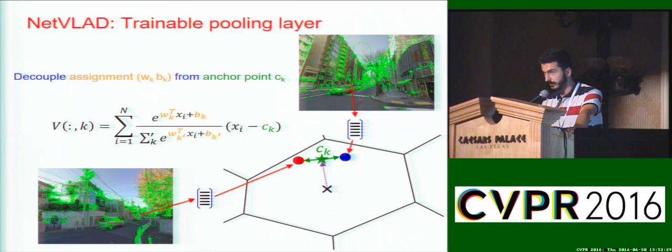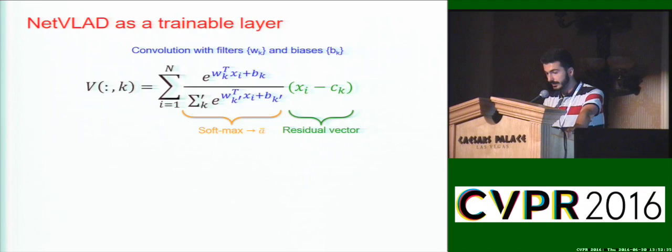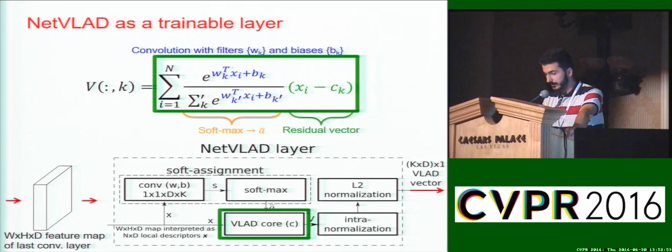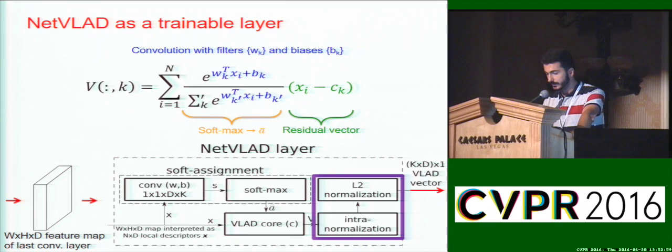The NetVLAD layer can be implemented easily in a standard CNN framework, where the input is the feature map from the last convolutional layer. These features are then passed through a convolution, followed by a softmax, which produces the soft assignments. These soft assignments are then combined with the input features to produce the NetVLAD vector. Finally, the vector is normalized in a standard manner as for VLAD. The layer is quite simple to implement using standard CNN blocks and is fully trainable using standard backpropagation through a directed acyclic graph.